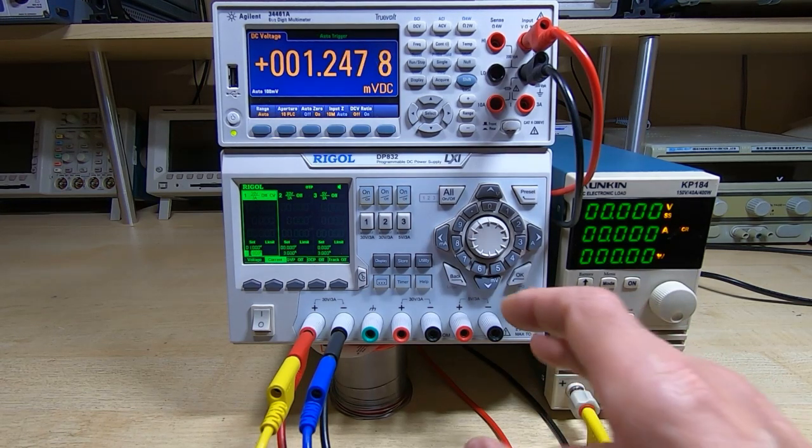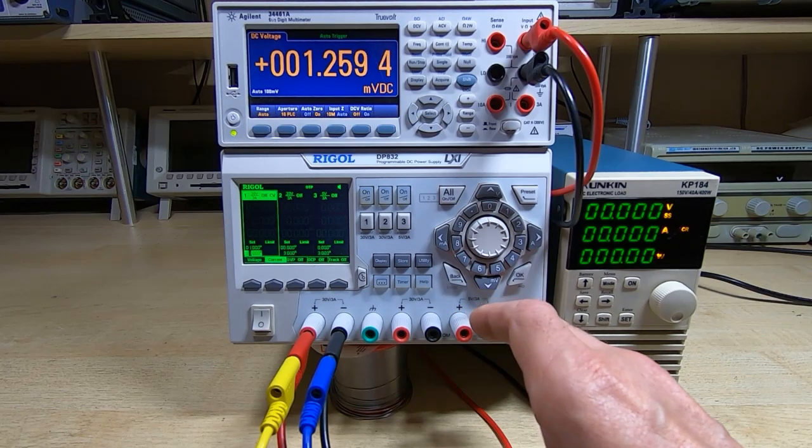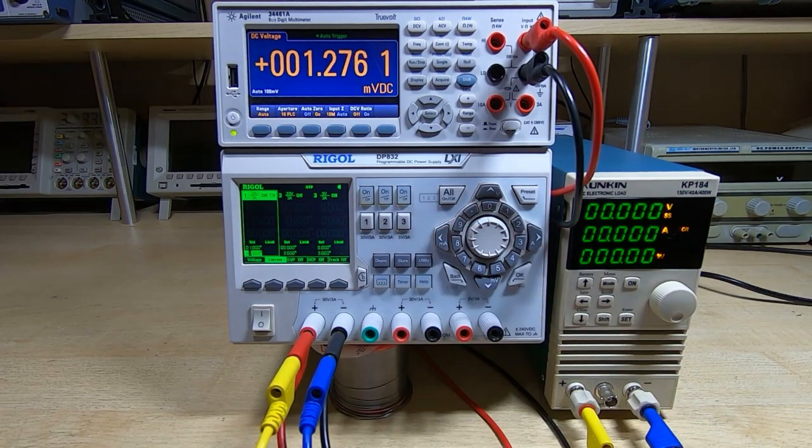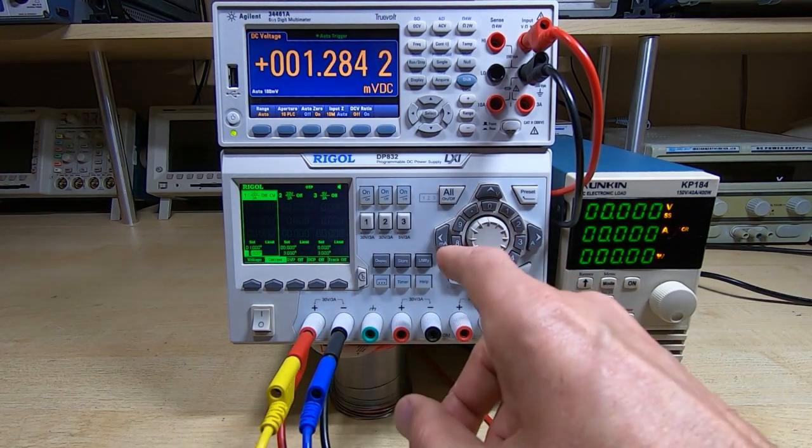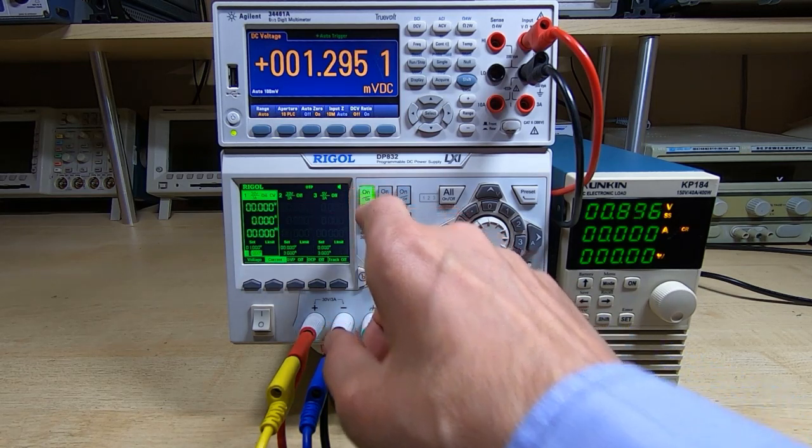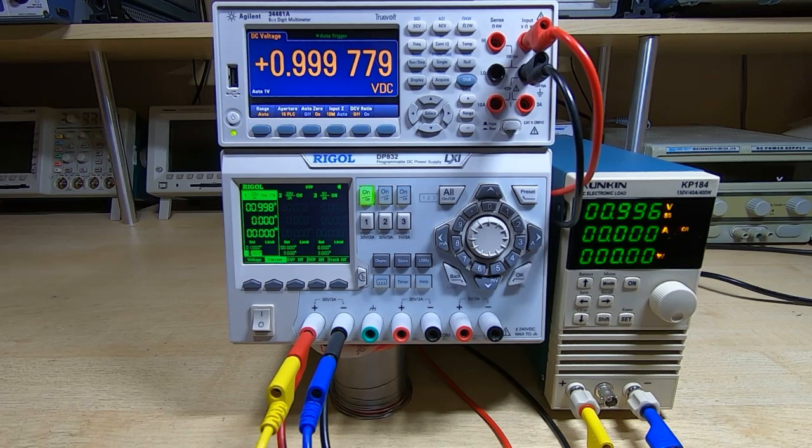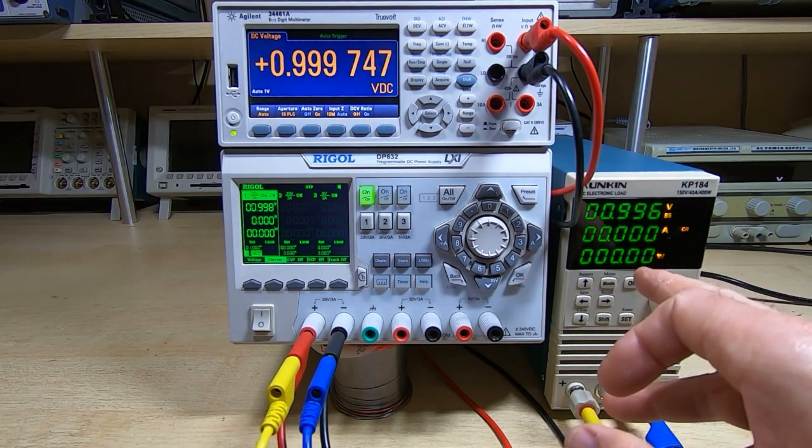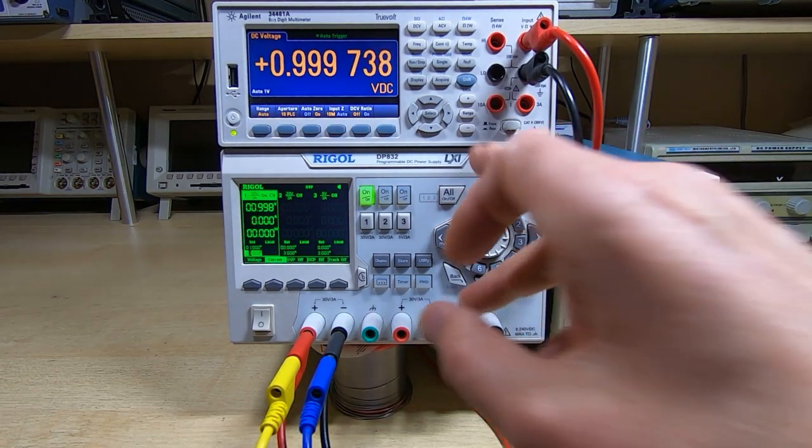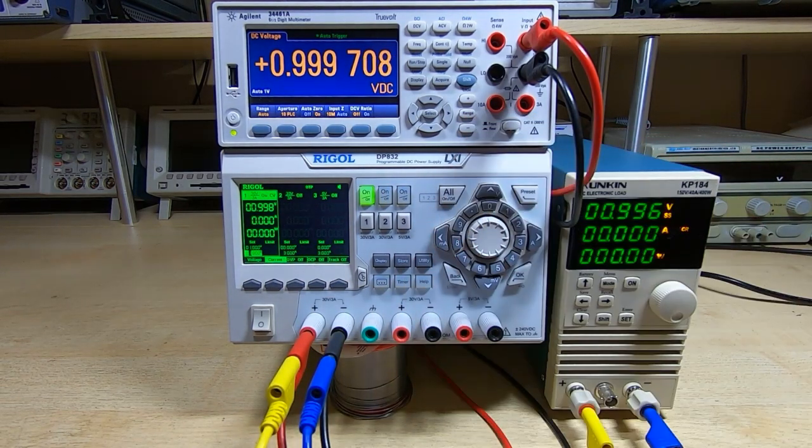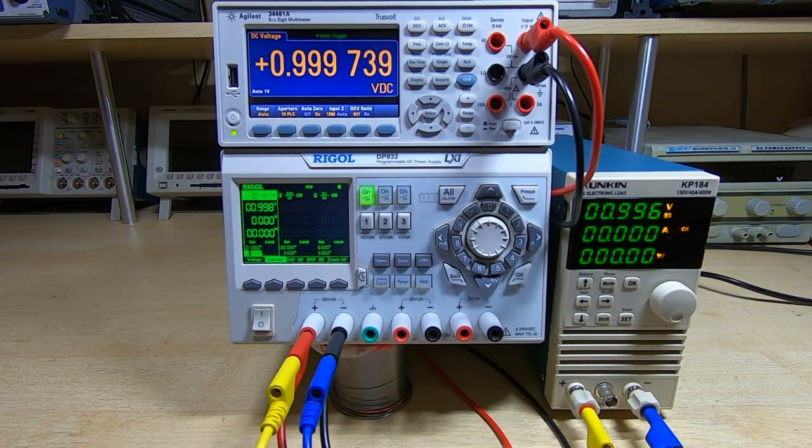One other thing that I noticed that this fix also resolved was that this supply's always had a voltage offset, a small voltage offset. Currently I've got it set to one volt, and if I turn this on you can see that on the Agilent bench multimeter and on the Kunkin electronic load we're getting very similar matching results.